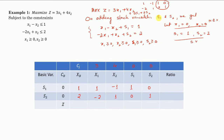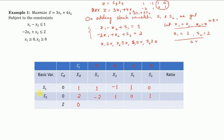Since the non-basic variables x1 and x2 are 0, we can write z only in terms of basic variables. So z = cb · xb = 0×1 + 0×2 = 0. The value of z is calculated using this dot product, since all non-basic variables are zero.